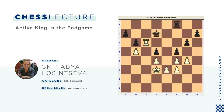In the beginning of the game our evaluation of the king is based mainly on whether the king is safe or not. Towards the end of the game, the active role of the king increases, and pretty often the outcome of the game can depend on whether the king is active or not. The king is one of the most important pieces in any sort of endgame, and to demonstrate it, please take a look at the following example.